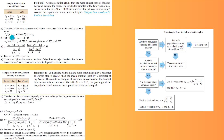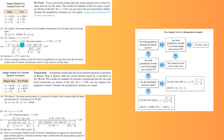n1 is 16, so 16 minus 1 is 15. n2 is 18, so 18 minus 1 is 17. Between 15 and 17, 15 is smaller, so df equals 15. Since this is a two-tailed test and alpha is 10%, divide by 2 to get 5%. The critical values are 1.753 and negative 1.753.